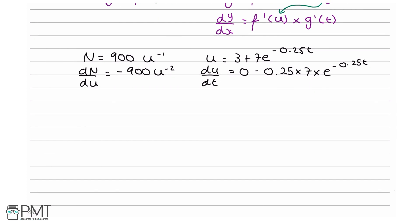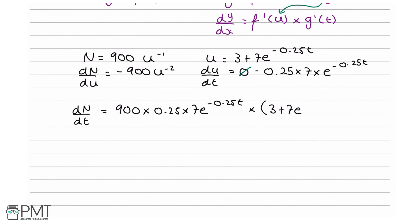So dn by dt equals minus 900 times minus 0.25 times 7e to the minus 0.25t times u to the minus 2, which is 900 times 0.25 times 7e to the minus 0.25t times (3 plus 7e to the minus 0.25t) to the power of minus 2.